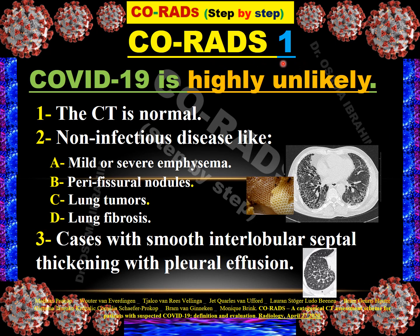CO-RADS 1 is very important because it represents a highly unlikely diagnosis of COVID-19. If the CT is normal but the patient is symptomatic with fever or COVID-like symptoms, we consider it CO-RADS 1. Non-infectious processes like lung fibrosis with honeycombing, lung tumors, perifissural nodules representing sarcoidosis, or emphysema are all CO-RADS 1. Also, smooth interlobular septal thickening with pleural effusions in congestive heart failure without ground glass opacity is CO-RADS 1. However, if ground glass opacity is also present, it becomes CO-RADS 3.